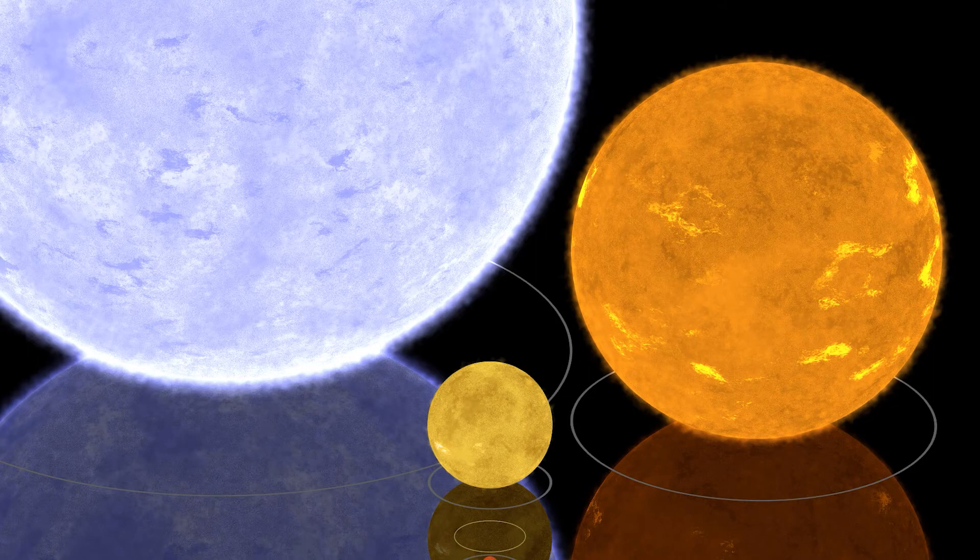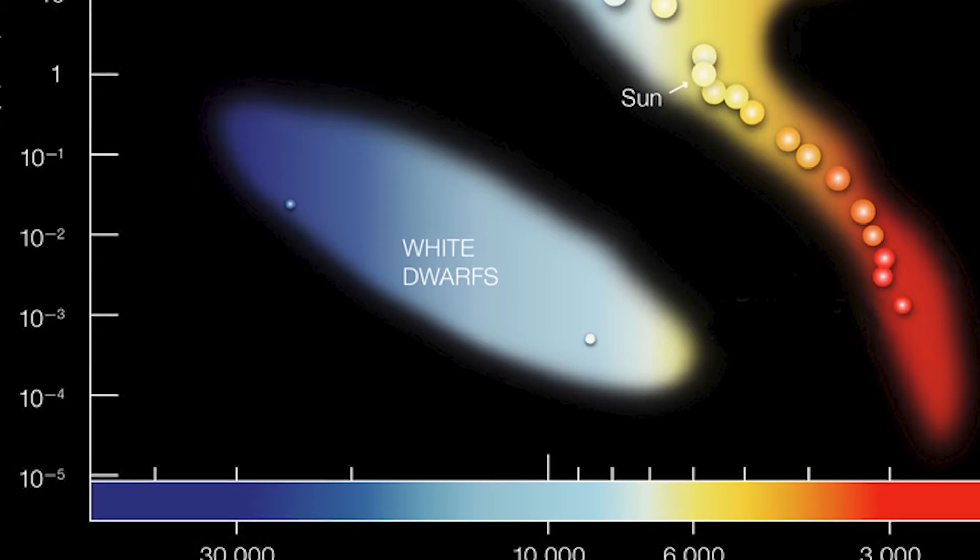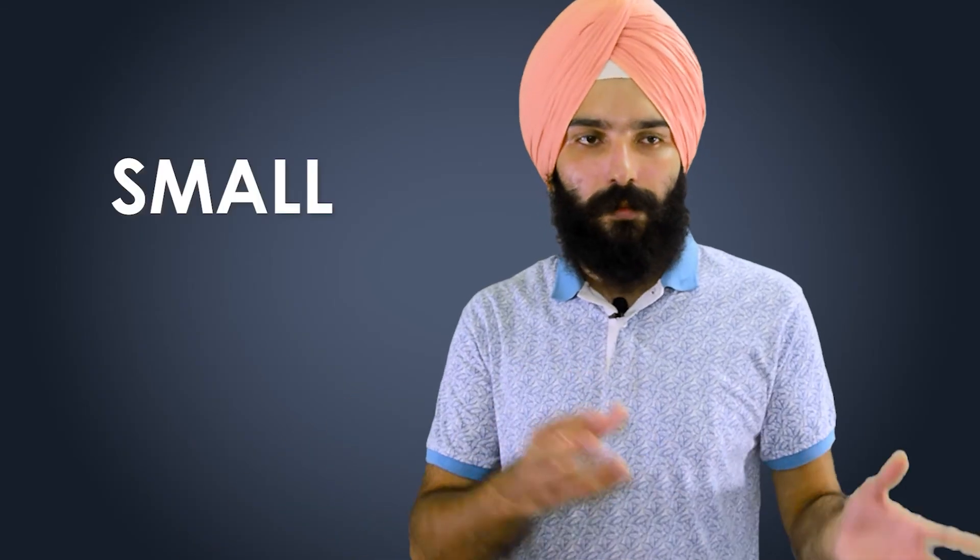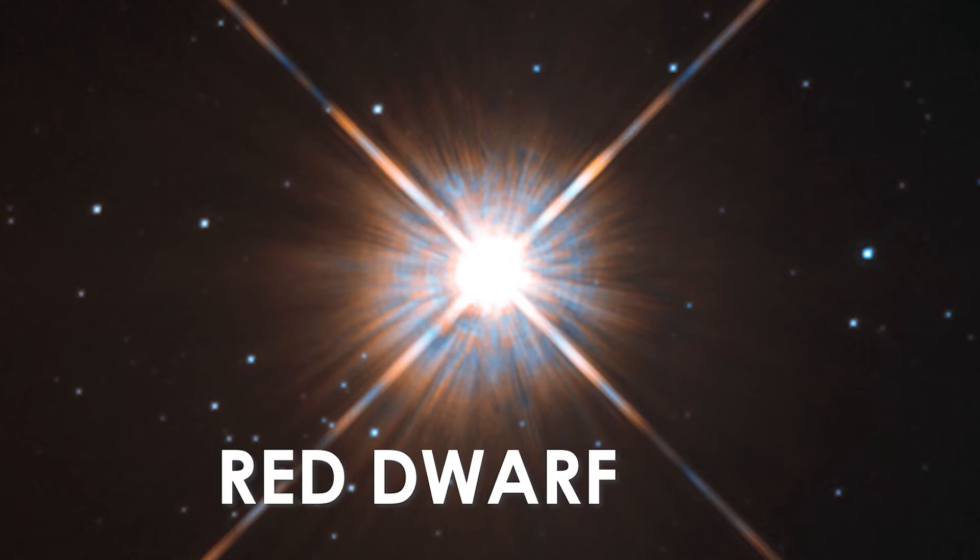And then of course, on the opposite end, you will also have the stars which have low temperatures and are also quite small. So they're also cool. These are the red dwarf stars.